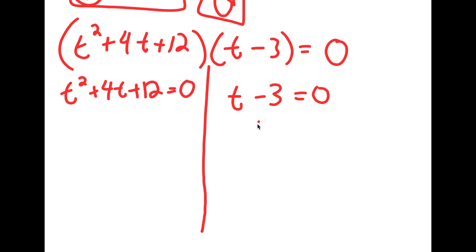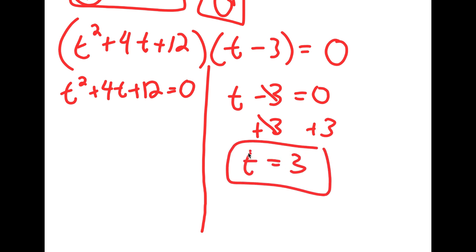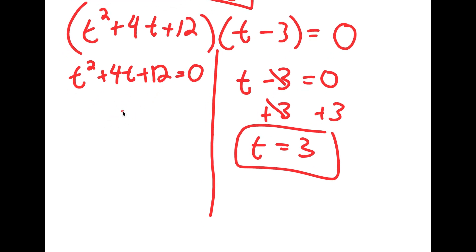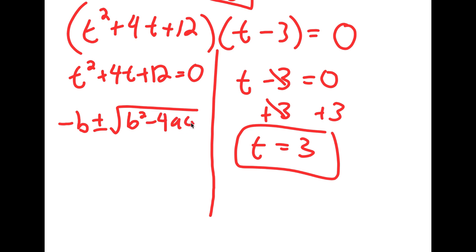For t minus 3 equals 0, adding 3 on both sides gives t equals 3, which we already found. For t squared plus 4t plus 12 equals 0, I'll use the quadratic formula: negative b plus or minus the square root of b squared minus 4ac, all over 2a. Here a is 1, b is 4, and c is 12.